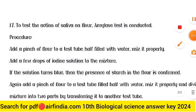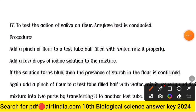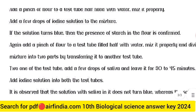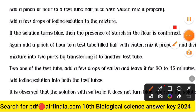Question seventeen — test of action of saliva on flour: procedure — add a pinch of flour to a test tube half-filled with water and mix it properly. Add a few drops of iodine solution to the mixture. If the solution turns blue, then the presence of starch in the flour is confirmed.